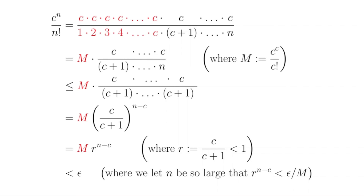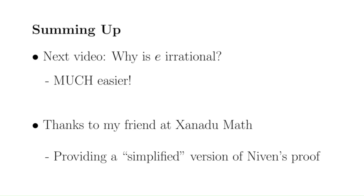You can pause on the screen to see the full argument for why factorial growth outpaces exponential growth. My next video is going to be on the proof that the number e is irrational — a much shorter and easier video. Finally, I want to thank my good friend from graduate school at Xanadu Math, who made me aware of Niven's proof and provided his revision of it, distilling it in a more straightforward way. Thank you to him, and thank you for watching — please leave any comments down in the comment section.